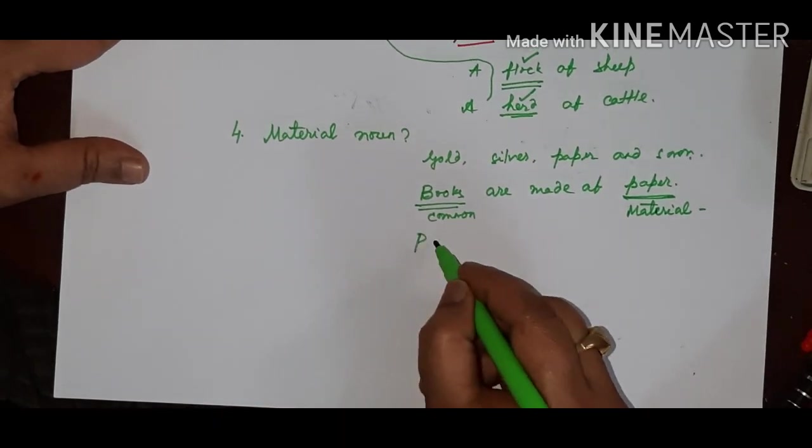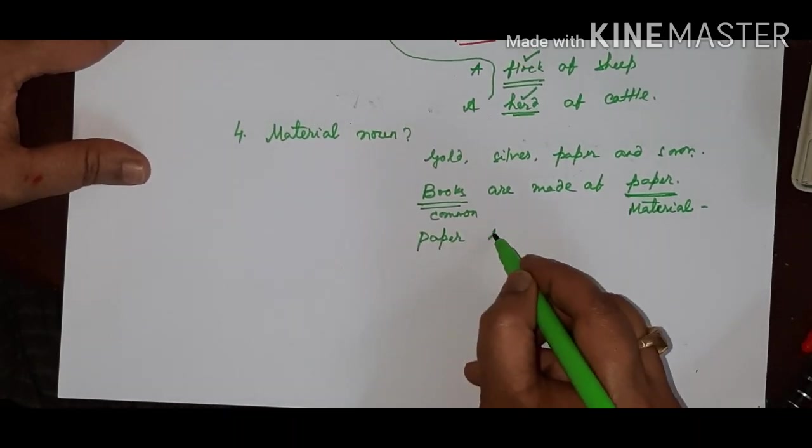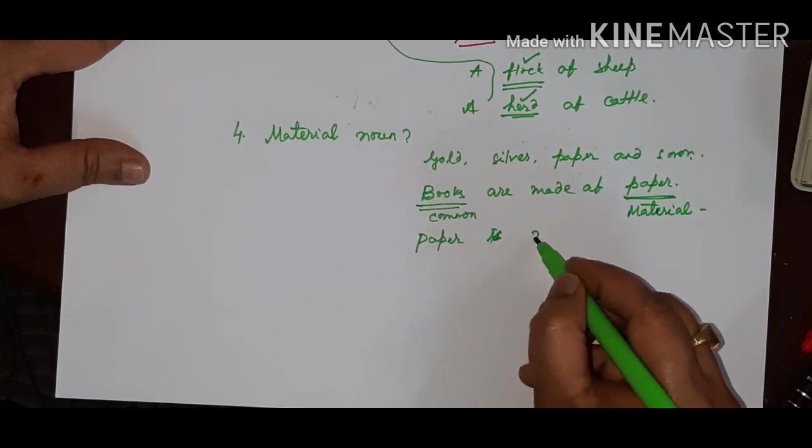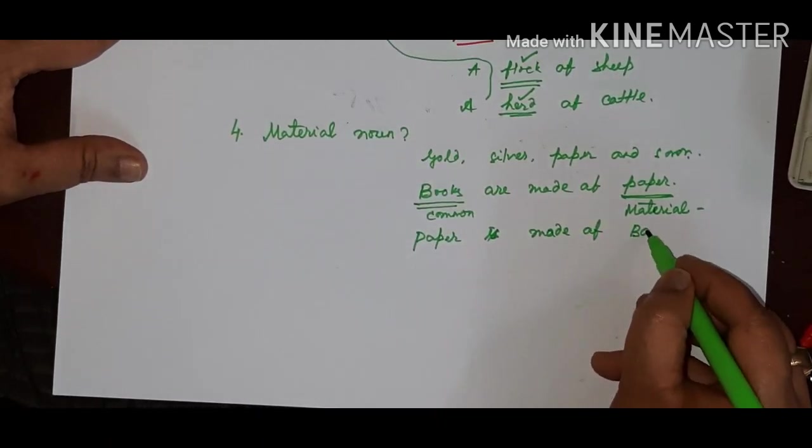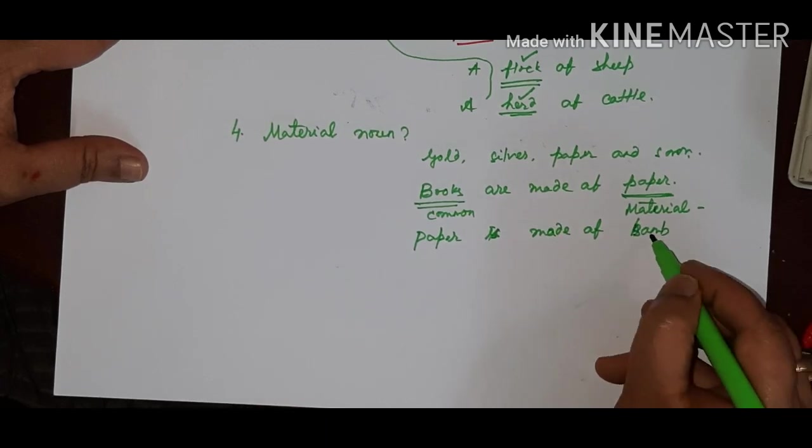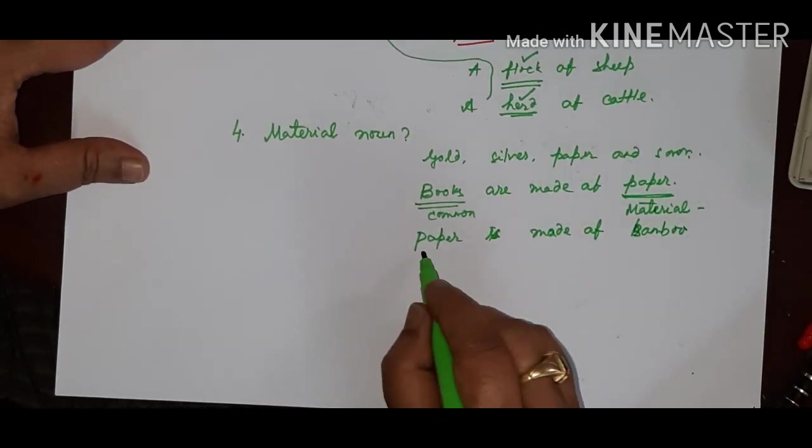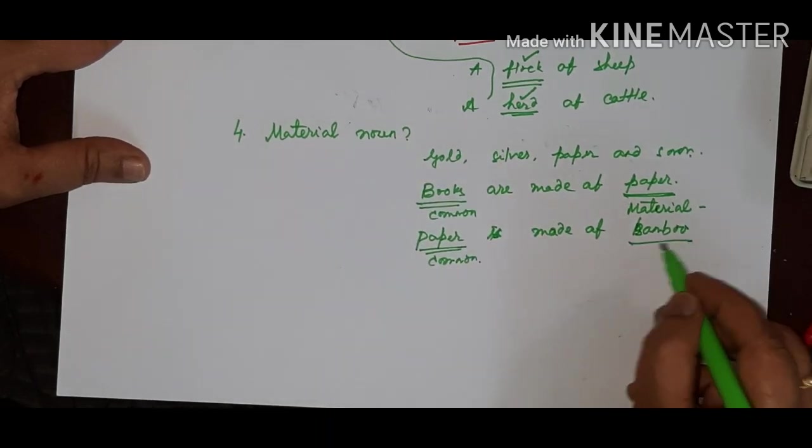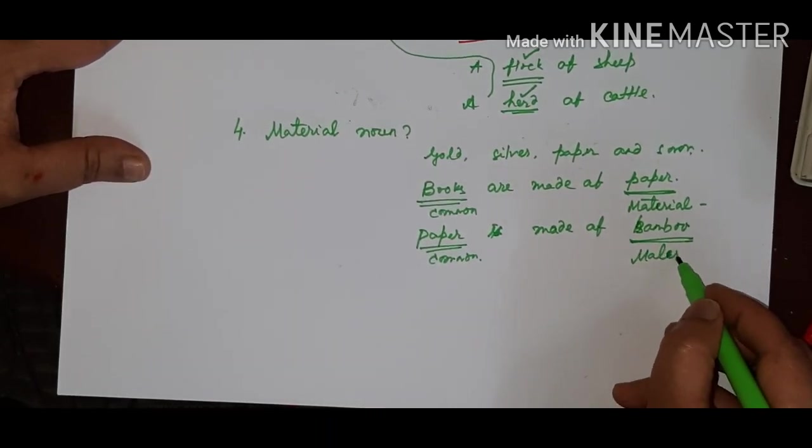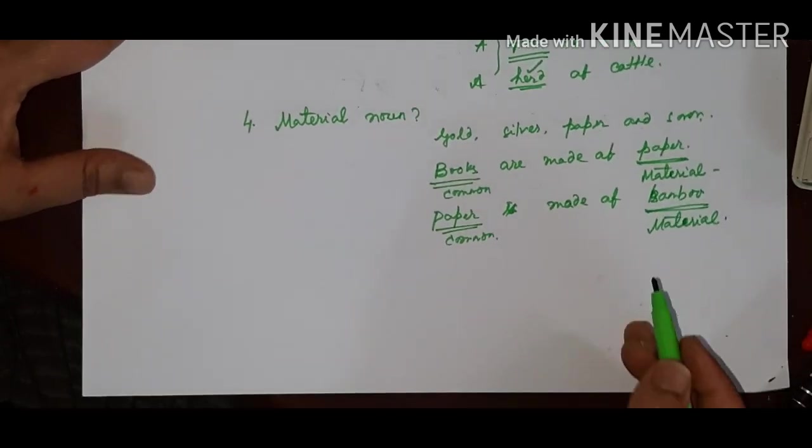But, paper is made of bamboo. Paper is made of bamboo. Here, paper is common noun. And bamboo is known as the material noun.